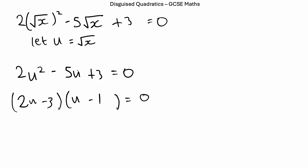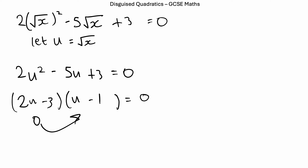We're not quite done yet. From the bracket (2u minus 3), we need to find the value of u. If u is 3 over 2, you multiply that by 2 to get positive 3, and positive 3 minus 3 gives us 0. Remember, to solve quadratic equations, you want each bracket to equal 0 — that satisfies the equation, because if one bracket is 0, the whole product is 0. So u for the first bracket is 3 over 2, or u equals 1, since 1 minus 1 is 0.